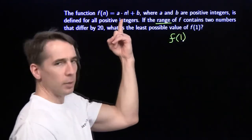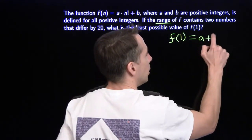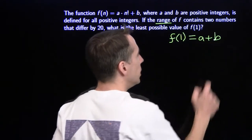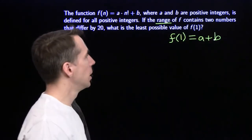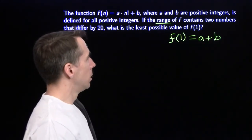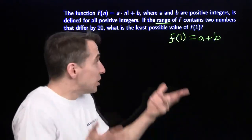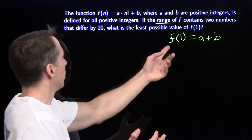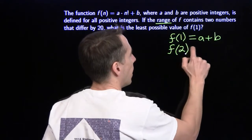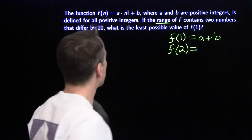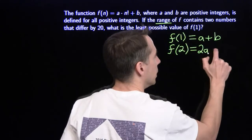Plugging in n=1: since 1 factorial is 1, we get f(1) = a + b. So the problem is asking for the least possible value of a + b. Let's keep going and put in n=2: 2 factorial is 2, giving f(2) = 2a + b.